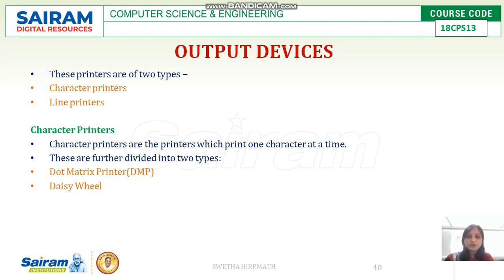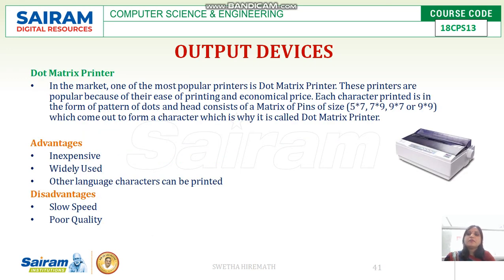There are two categories of character printers: dot matrix printers and daisy wheel printers. The dot matrix printer is very popular due to its ease of printing and economical price. Each character is printed as a pattern of dots, and the print head consists of a matrix of pins.